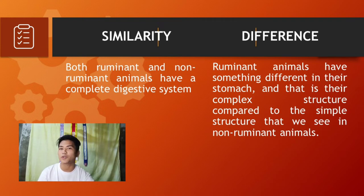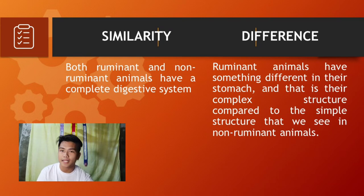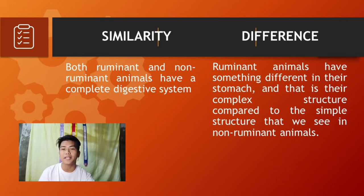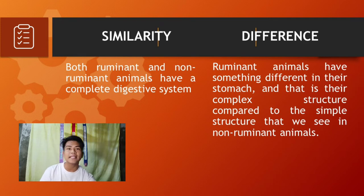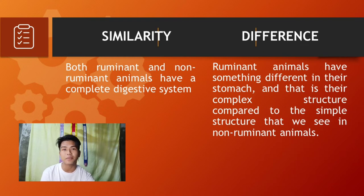The simplest example to understand the similarities and differences between ruminant and non-ruminant animals is the structure of their digestive system. In terms of similarity, both ruminant and non-ruminant animals have a complete digestive system. But when it comes to differences, ruminant animals have a complex stomach structure compared to the simple structure seen in non-ruminant animals.